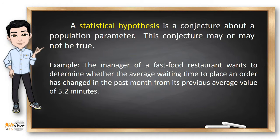A statistical hypothesis is a conjecture about a population parameter. This conjecture can be a theory, a claim, or an assertion and may or may not be true.